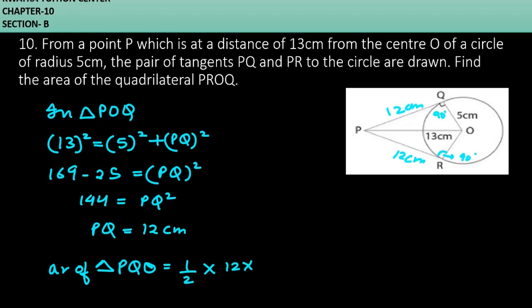Base is 12 cm, height is 5 cm. 2 and 12 cancel. 6 times 5 will give you 30 cm squared.